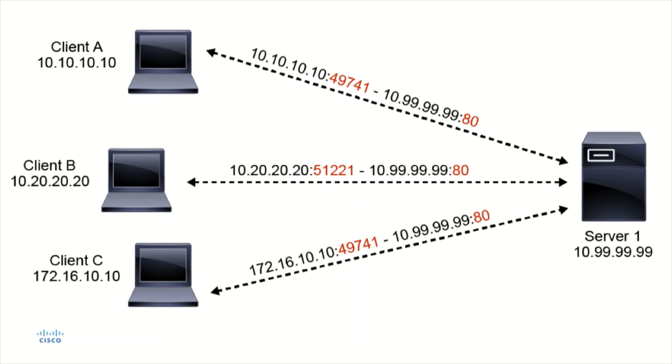As the TCP segment travels from client A to server one, server one receives that connection request and has to go through the three-way handshake. With that three-way handshake, there's a reply that comes back. We call that a SYN-ACK. The SYN-ACK is going to be directed to that ephemeral port that client A selected, port 49741 in this case. In the return segment from server one, it'll have a destination address of 10.10.10.10 with a destination port of 49741, and the source address will be 10.99.99.99 with a source port of 80.